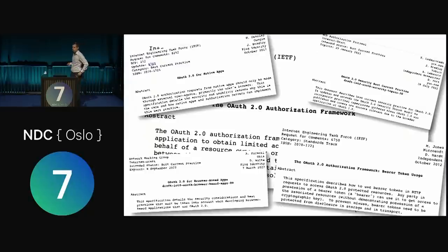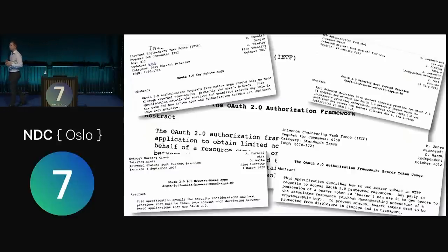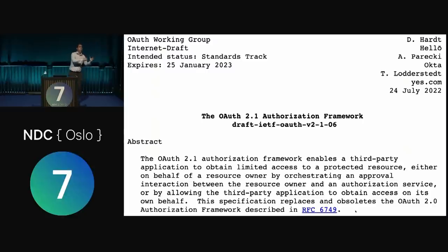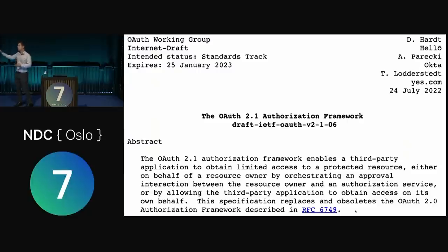In essence you have this whole messy ecosystem and you need to read about five or six specifications to get a current idea of what you're supposed to do today, and even then it's not that clear. The working group decided this is probably not the best way of doing things, and the old spec is kind of not great anymore. So let's consolidate current best practices in OAuth 2.1 — take the original spec, remove everything deprecated, add everything we've learned in the meantime. And that became OAuth 2.1.